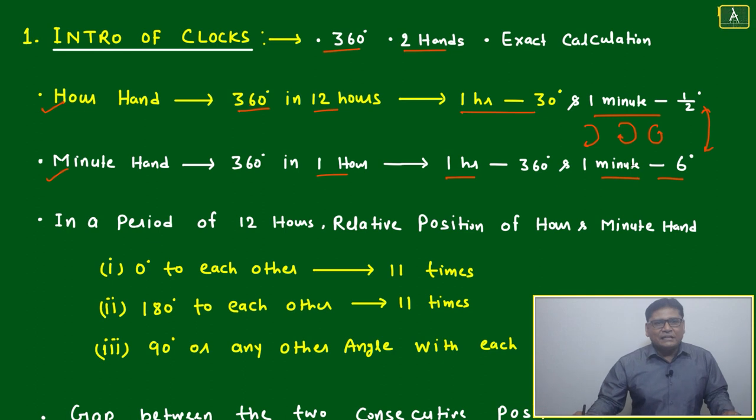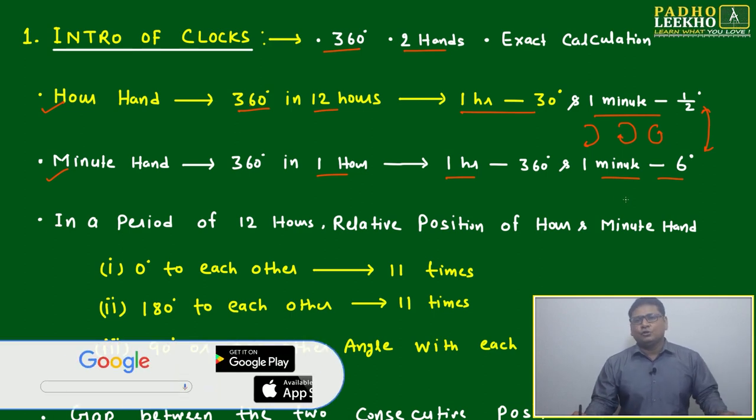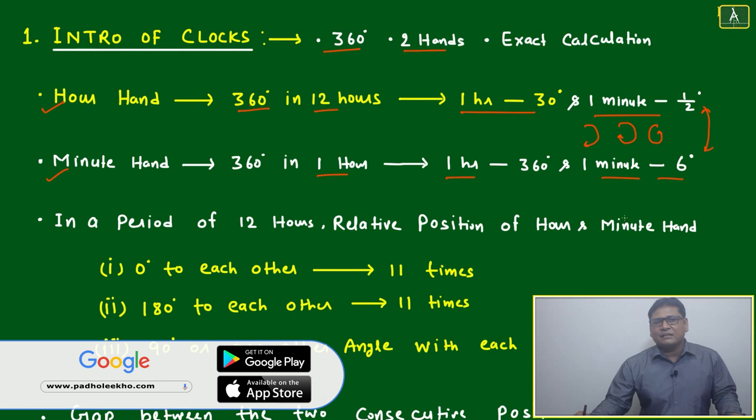Similar way, effective or relative speed of minute hand and hour hand will be 6 degrees minus half degree equals 5.5 degrees per minute. Per minute, minute hand is going ahead of hour hand by 5.5 degrees. Just suppose it is 5 minutes calculation: 5 times 5.5 equals 27.5 degrees - minute hand goes ahead.